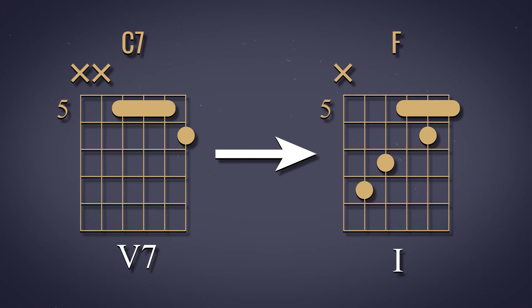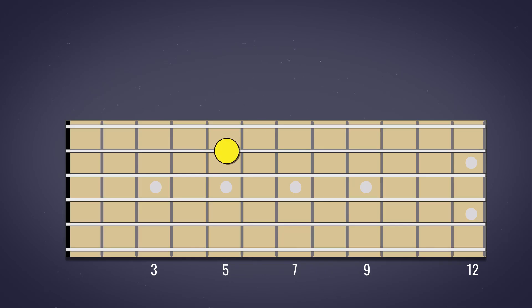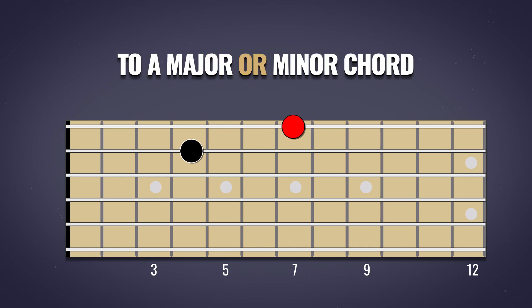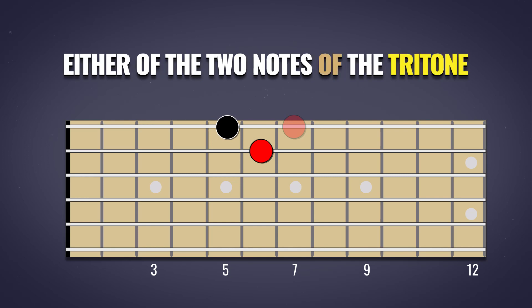You can hear that resolution. And that C7 could also resolve to an F minor just as easily. Perhaps the easiest way to think about this is that the tritone will resolve to a major or minor chord whose root is a half step above either of the two notes of the tritone.